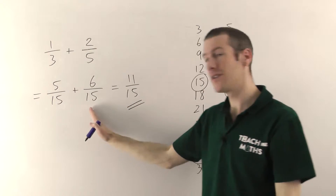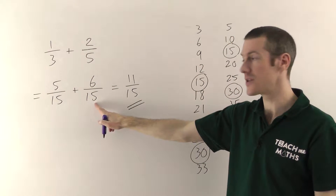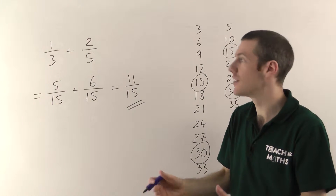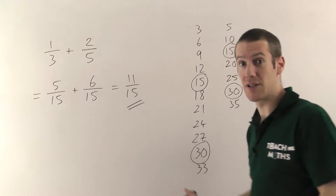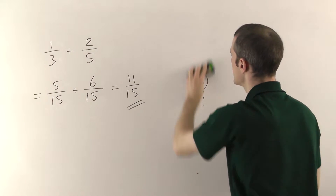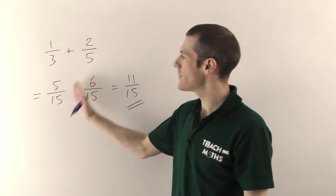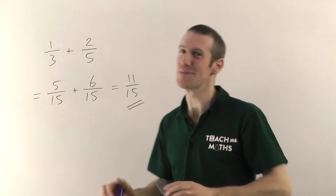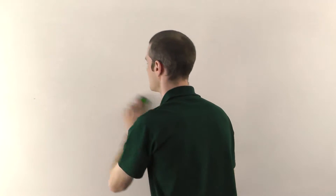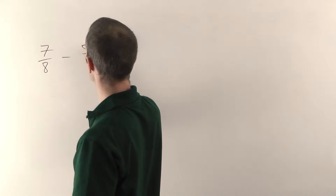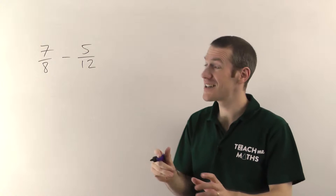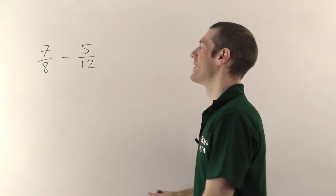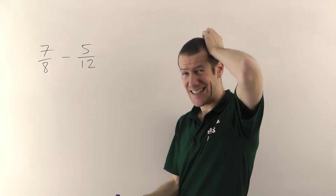That's why we put 15 on the bottom — we know 3 will go into it and 5 will go into it. As long as they're the same on the bottom, we can add them. Now let me try a slightly different example. Some of you might be wondering: couldn't we have just done 3 times 5 to get 15? Well, sometimes you can and sometimes you can't. So we'll have 7 eighths minus 5 twelfths. I'm going to show you what happens if you just multiply the numbers at the bottom — technically it does work, but it's a real pain to do. 8 times 12 is 96.